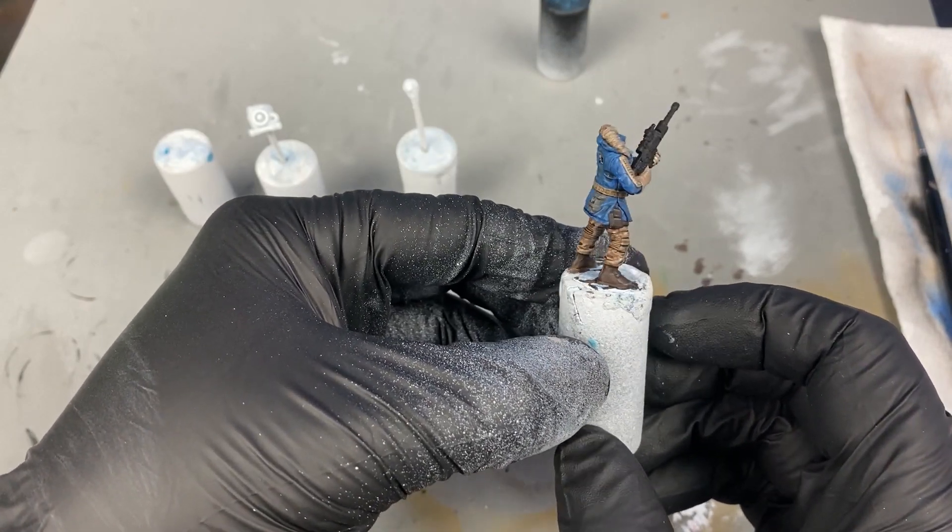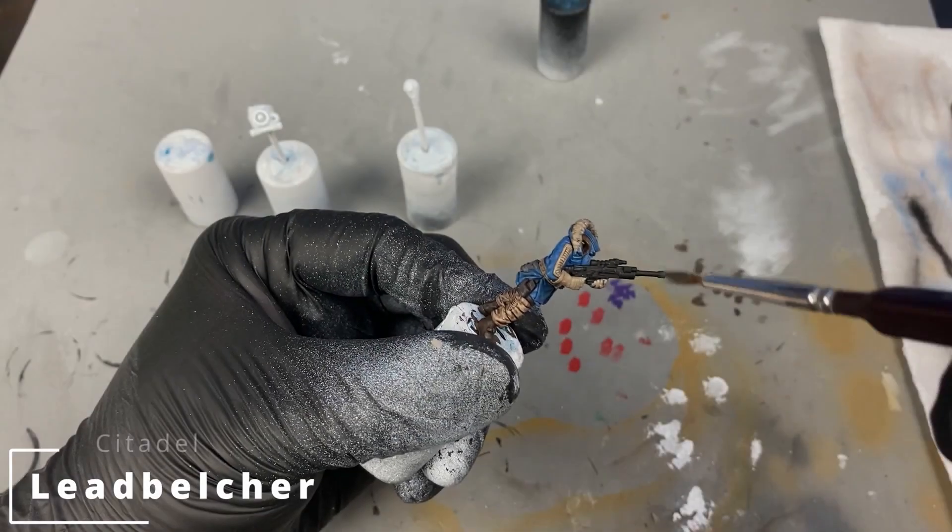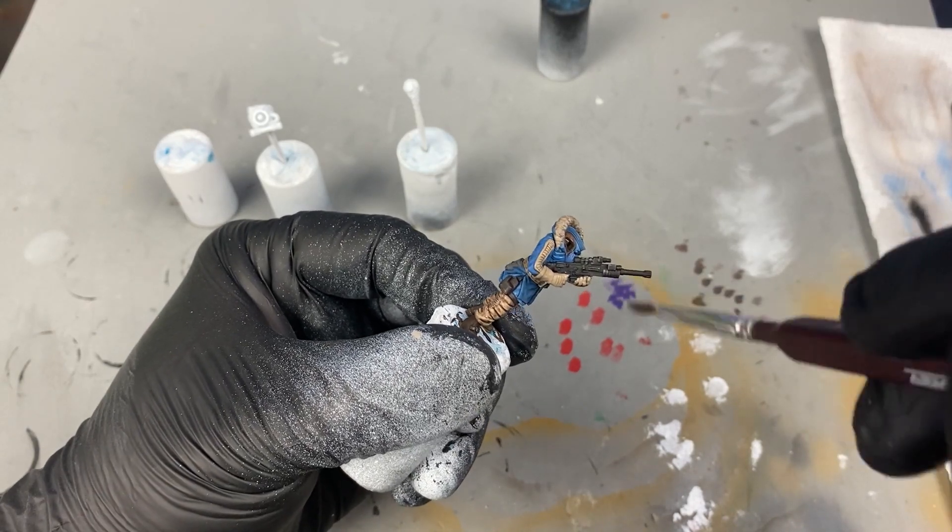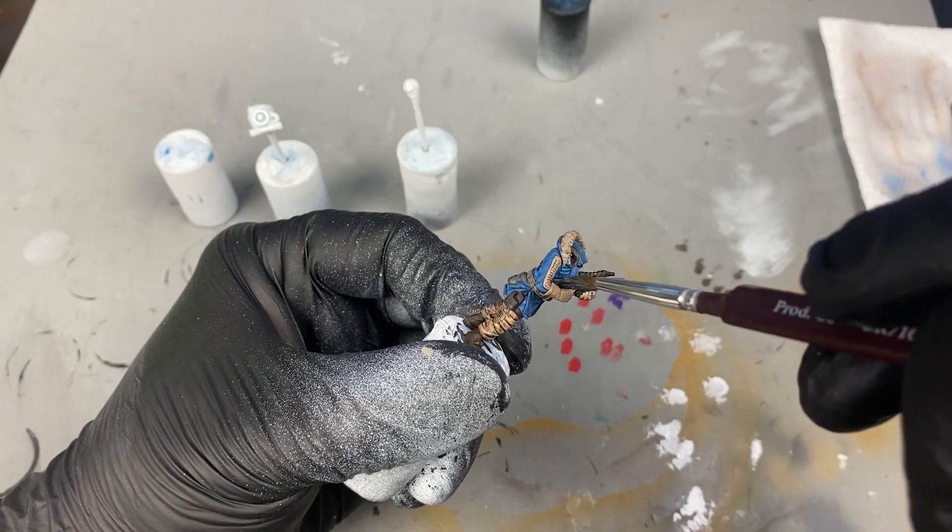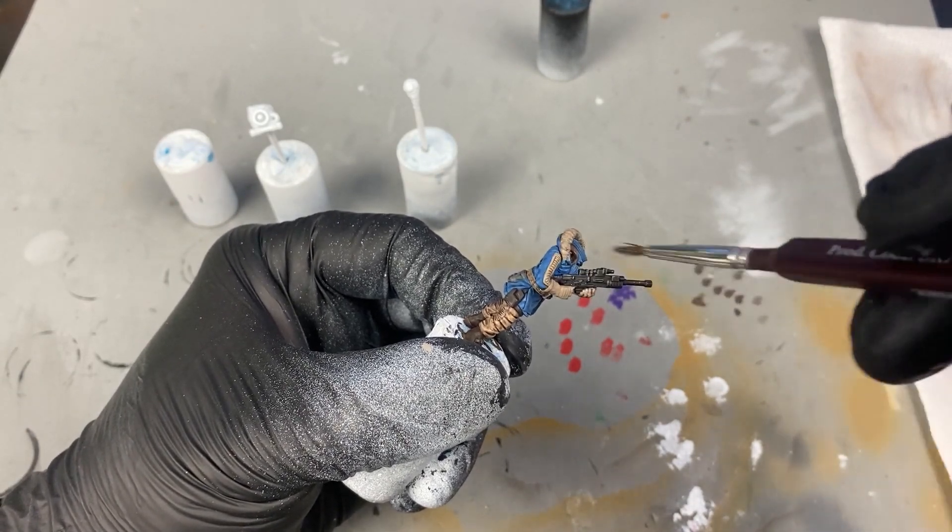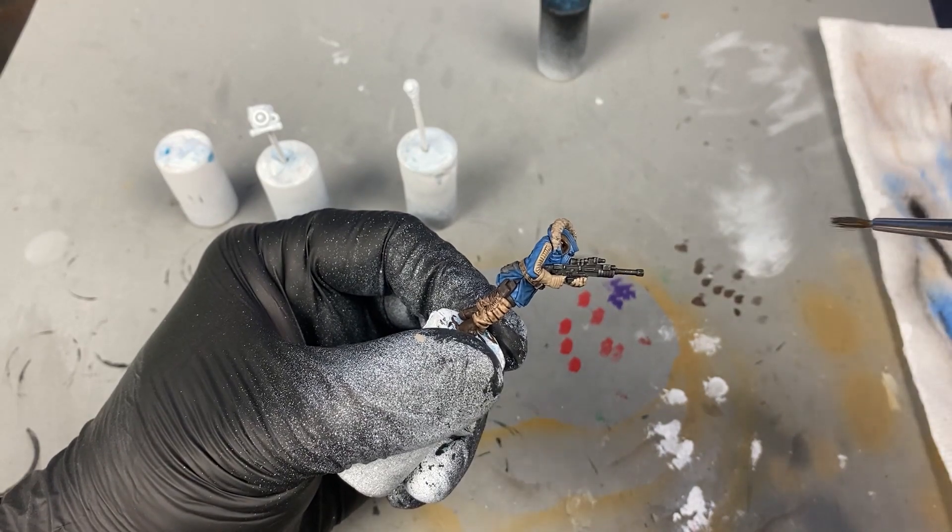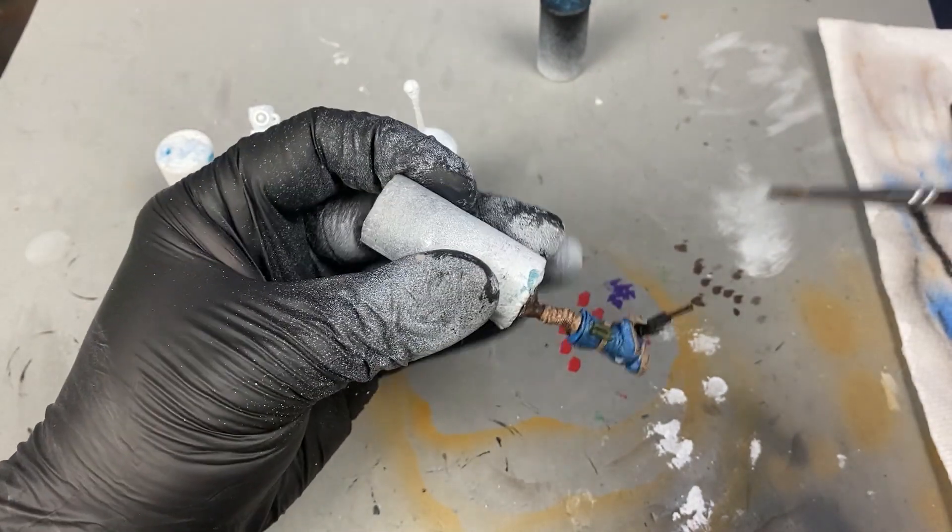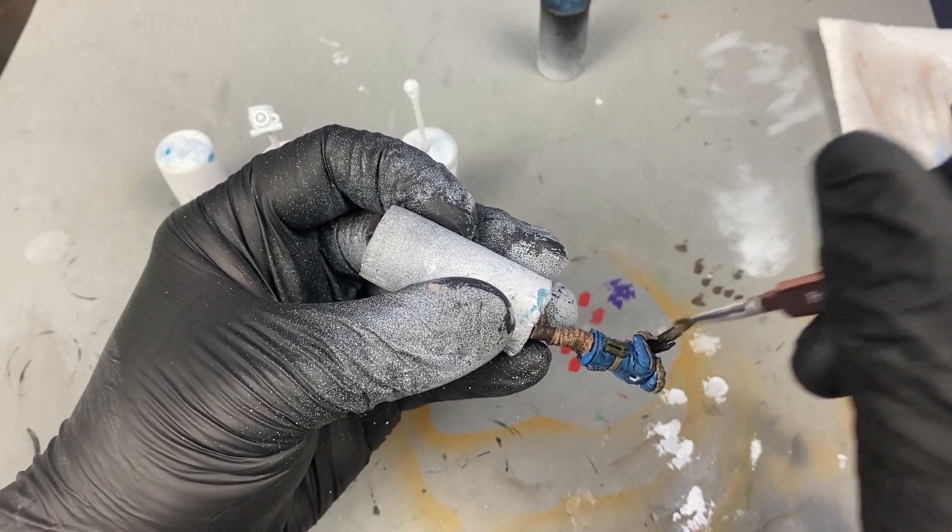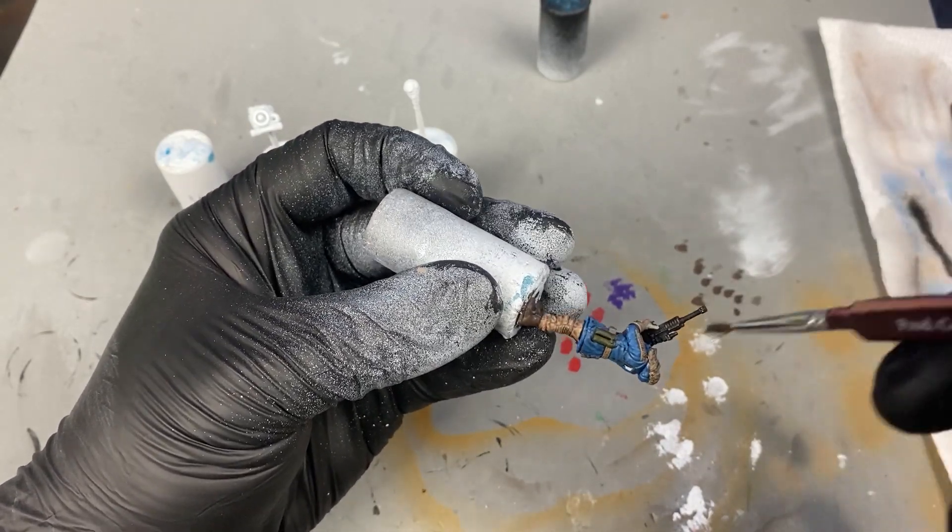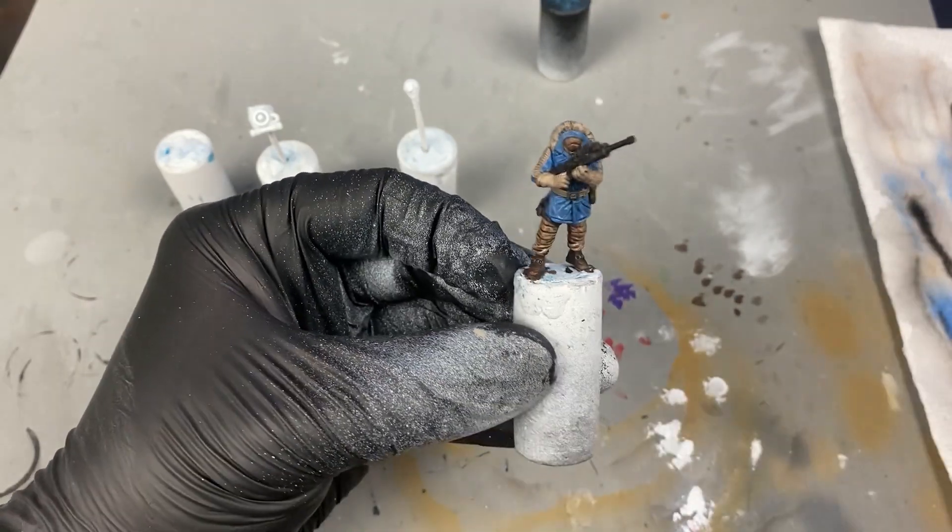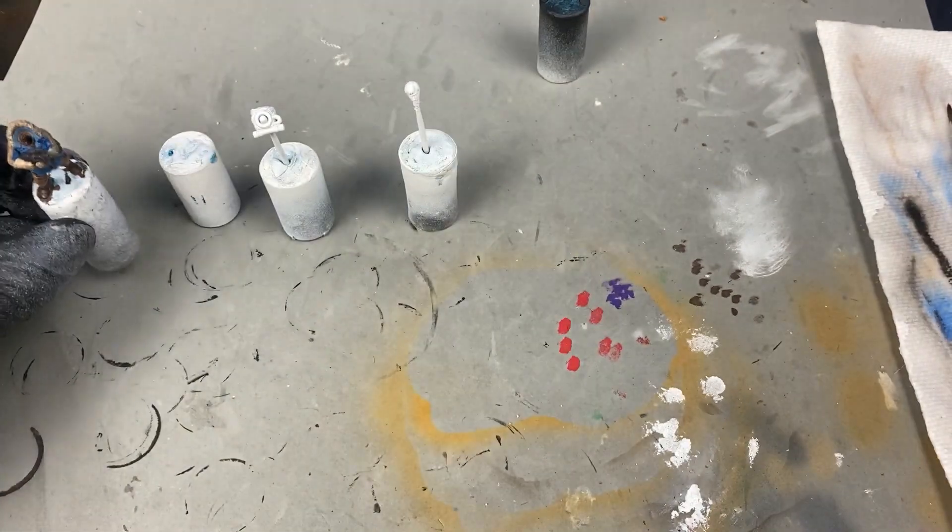After the model has fully dried and is looking fantastic, we're going to make it even better by using Leadbelcher to highlight the raised edges with a dry brush. With the torso pretty much set, we're going to set it aside, and now we're moving on to the head.